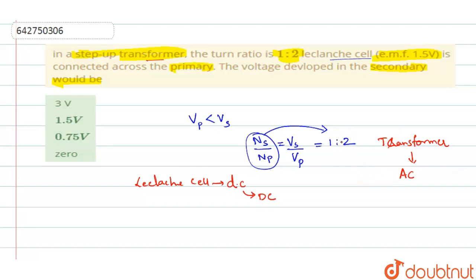There will not be any change in the magnetic flux across the primary. And that is why across secondary, the voltage developed will be 0. Because you are connecting a Leclan's cell which works only on the direct current, the voltage across secondary will be 0. So option 4, 0 is the right answer.